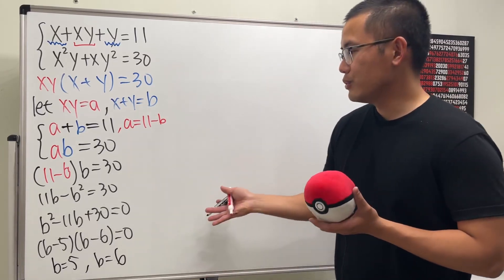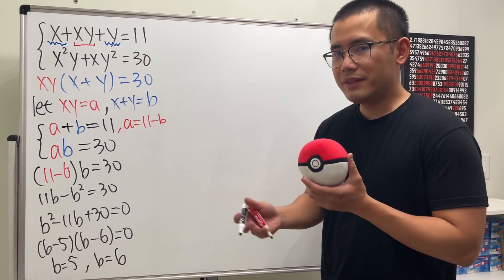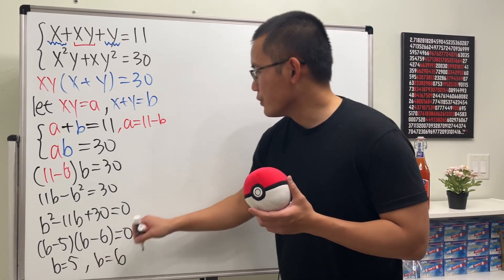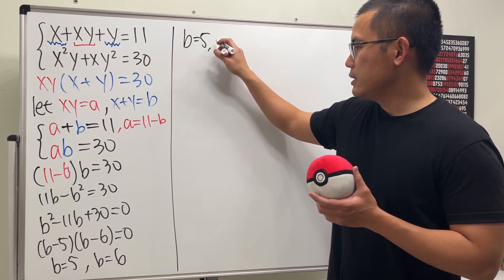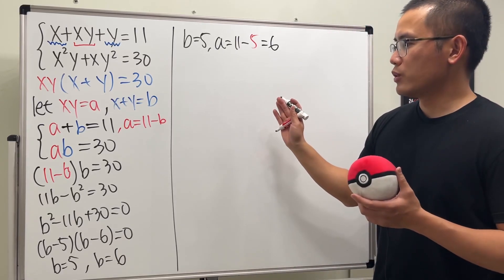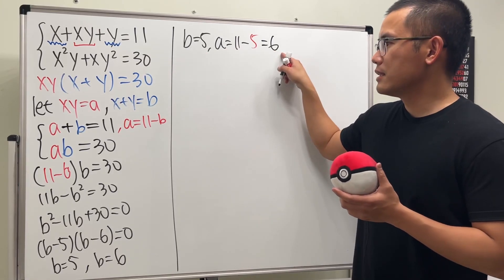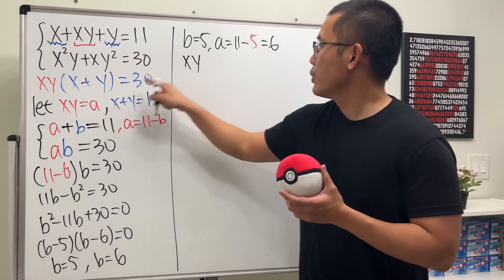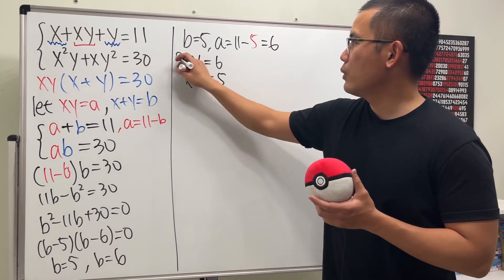We're not done yet — we also have to figure out 'a', and there are four combinations to work through. When b equals 5, a equals 11 minus 5, which is 6. So for this first case, a equals 6 and b equals 5. That means x times y equals 6, and x plus y equals 5.